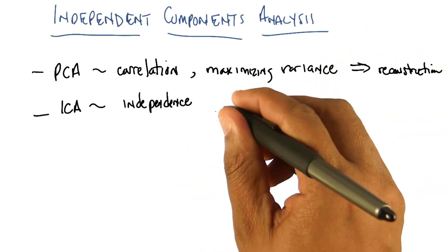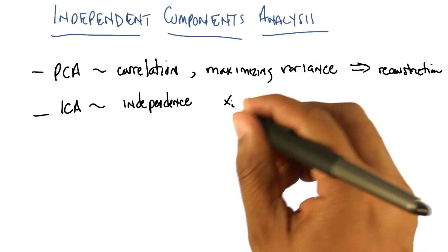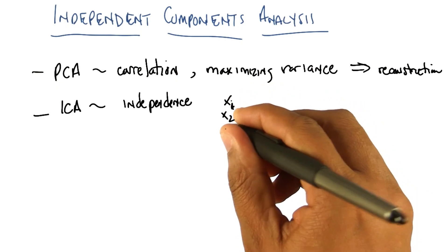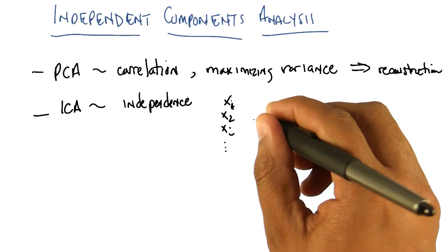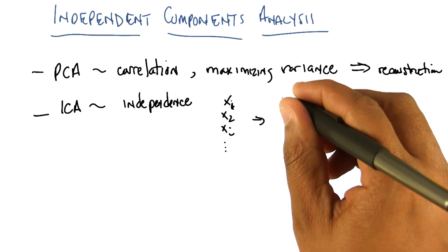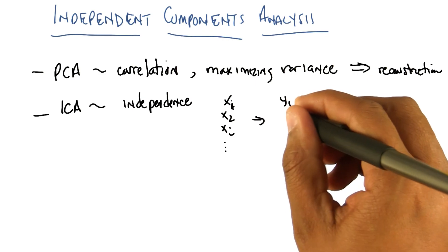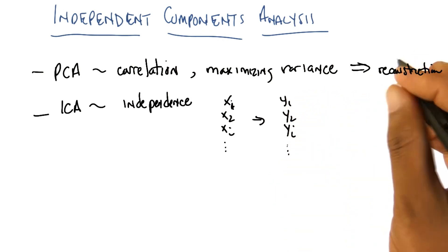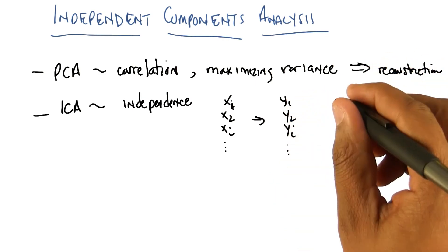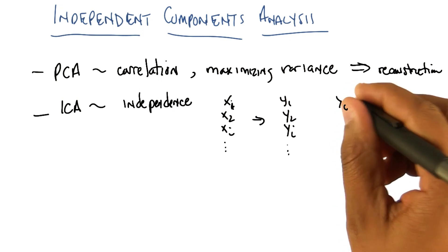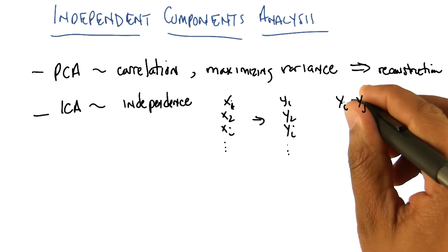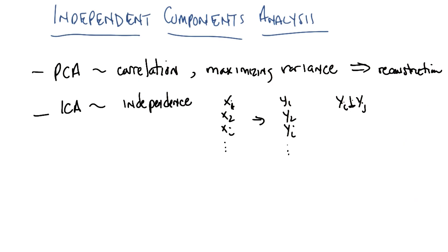So you're converting your X1, X2, Xi into some new feature space, let's call it Y. Y1, Y2, Yi, such that each one of the new features are statistically independent of one another. That is to say their mutual information is equal to zero.